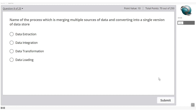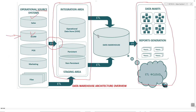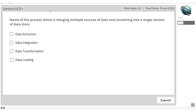What is the name of the process that merges multiple sources of data and converts them into a single version of a data store? The options are: data extraction, data integration, data transformation, and data loading. Data from sales, e-commerce, POS, and marketing coming into one area is data integration — select option two.